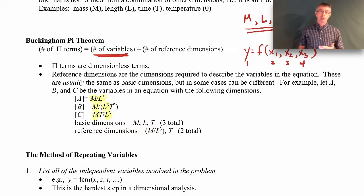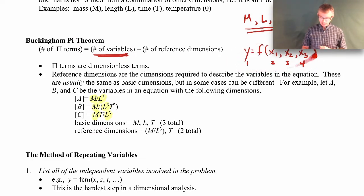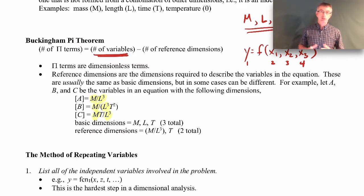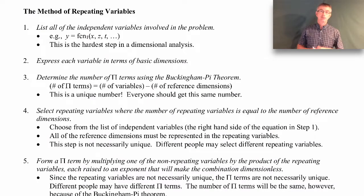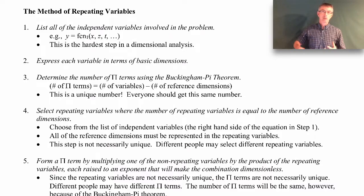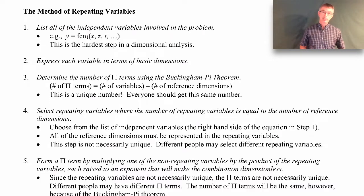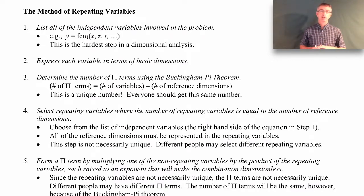The Buckingham Pi theorem tells us the number of dimensionless terms we need to describe the original dimensional relationship — we can rewrite it in a smaller number of terms. But it doesn't tell us what those terms look like. That's where the method of repeating variables comes in. This is just one of several techniques for finding the dimensionless parameters — it's like an algorithm. If you follow it, you turn the crank and figure out what the pi terms look like.